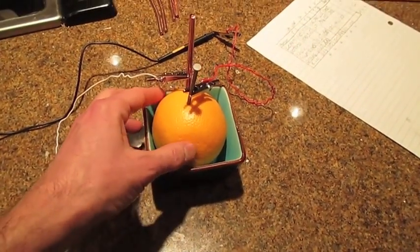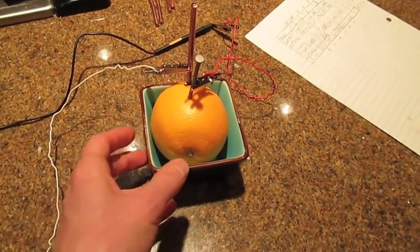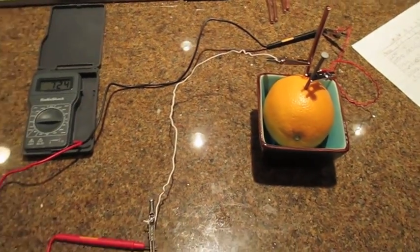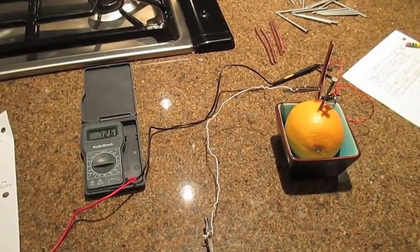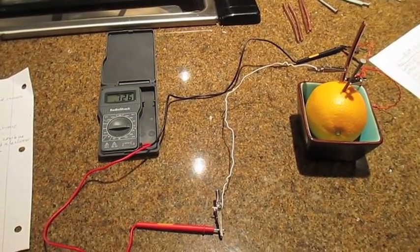Another thing we learned was that the fruit wobbles all around. So it's good to have a little holder for the fruit. That's what this cup is here for. So anyway, those are some tips about our experiment. Some things that we learned from trial and error that hopefully will help you with yours.